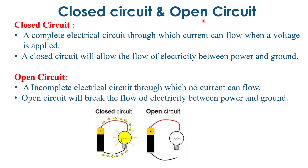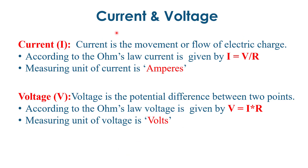Next are closed circuits and open circuits. A closed circuit is a complete electrical circuit through which current can flow when a voltage is applied. A closed circuit allows the flow of electricity between power and ground. An open circuit is basically an incomplete electrical circuit through which no current can flow, and it breaks the flow of electricity between power and ground because there is no closed path.